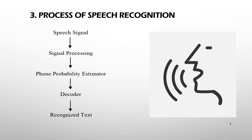The decoder uses models of all conceivable language utterances to compare them and outputs the most likely speech. Typically, the decoder is implemented as a search through a well-known algorithm, such as dynamic time warping and hidden Markov model.